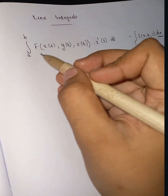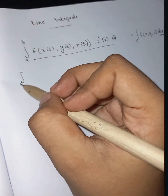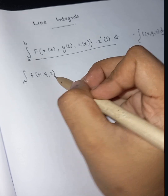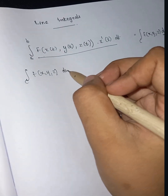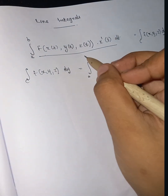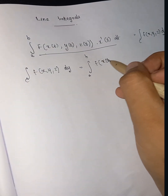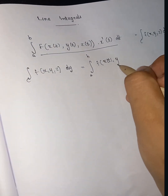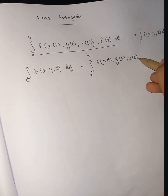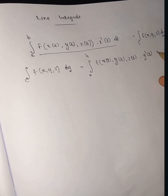Similarly, the line integral with respect to y is: integral of f(x, y, z) dy, which equals the integral from a to b of f(x(t), y(t), z(t)) times y'(t) dt.